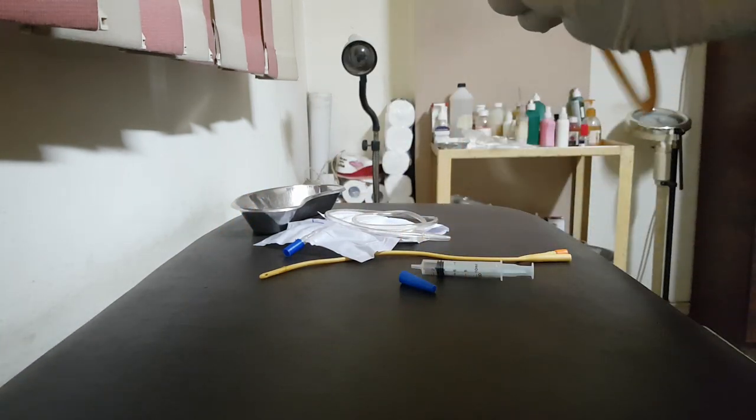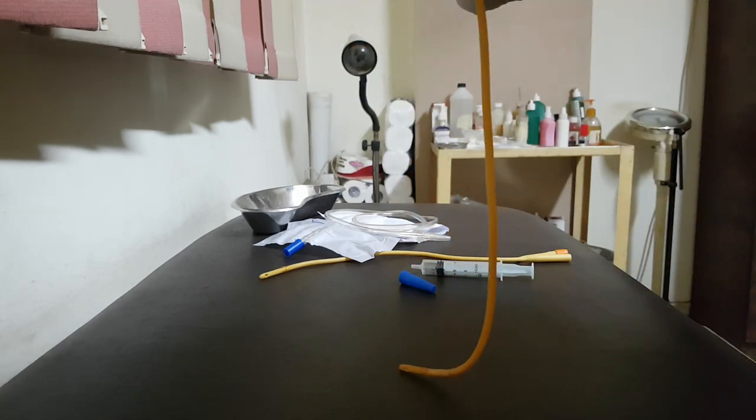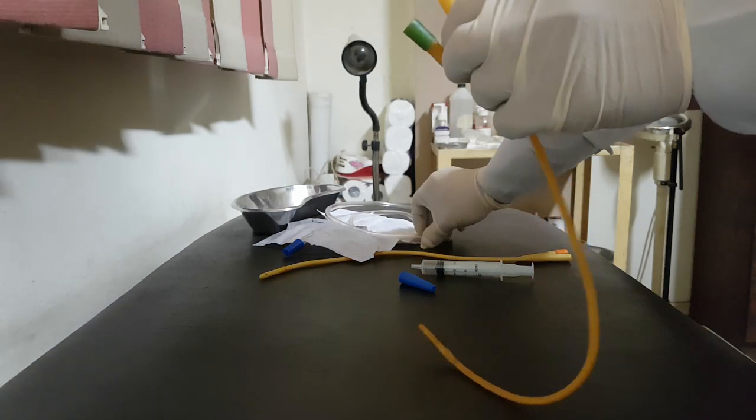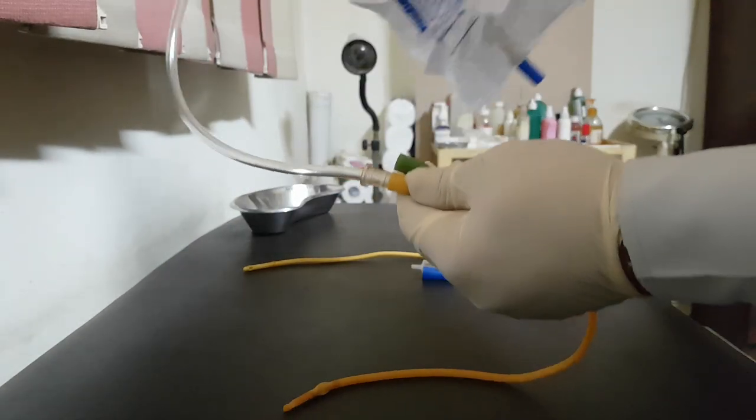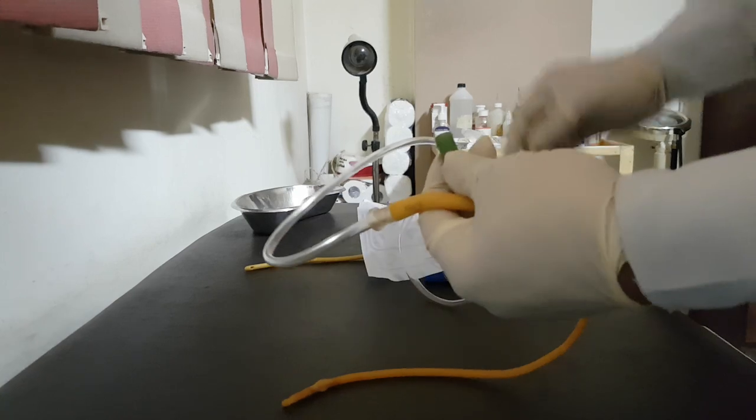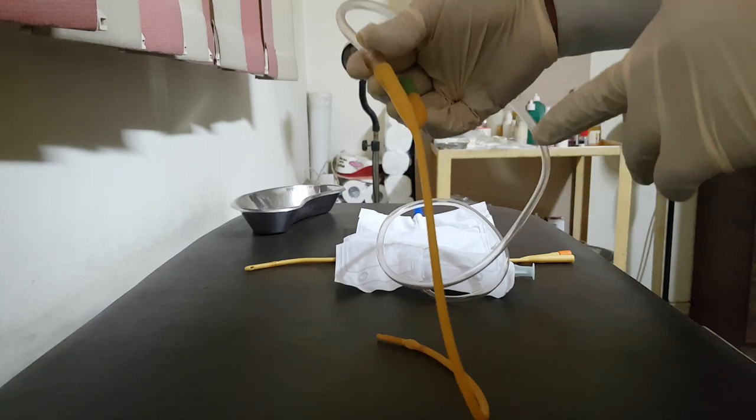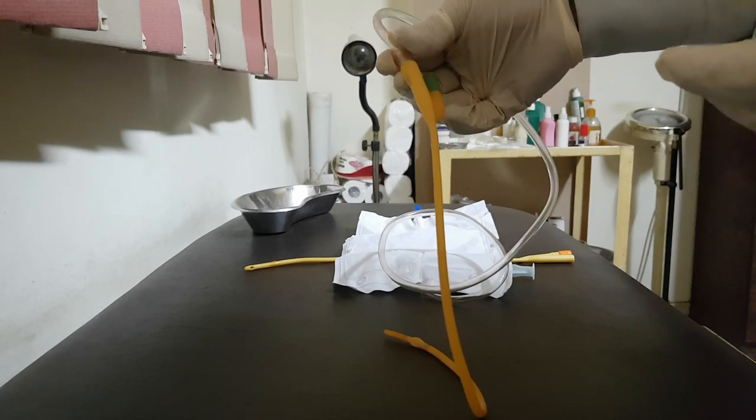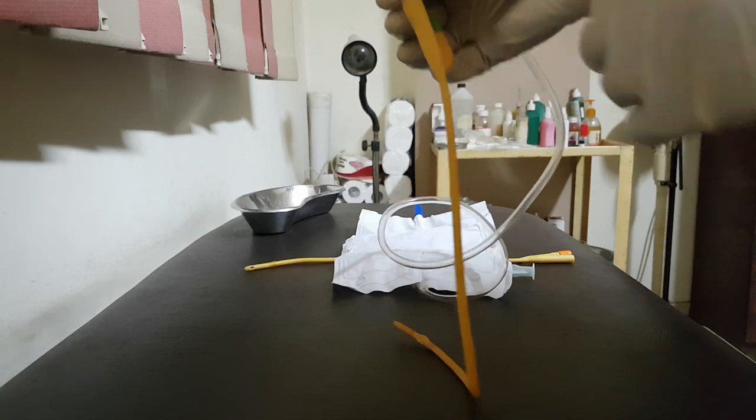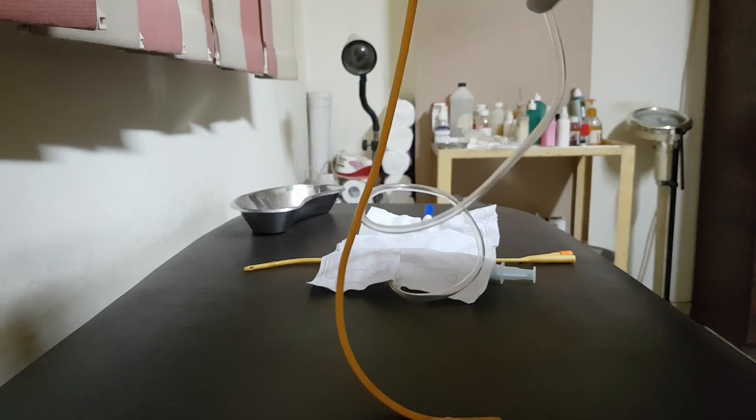There's another catheter with three channels but not available with me right now. The third, we know now that we have two channels: one for the passage of urine will be connected to the collecting bag of urine like this, and the other channel for the balloon. There is another catheter with three channels. The third one will be for flushing of the bladder after bladder surgery to remove the blood clots and the debris inside the bladder. But this example has only two channels: one for the balloon and one for the passage of urine.